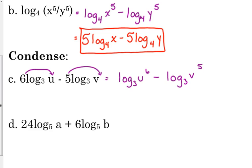And then we're subtracting so that becomes a single logarithm and we divide u to the sixth over v to the fifth.